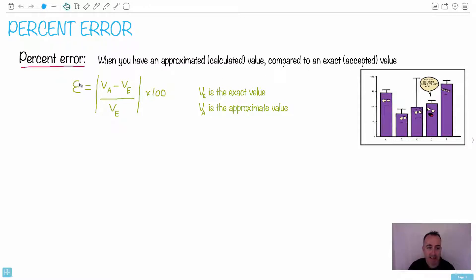So we have this equation right here, this weird-looking E, it's called epsilon, and that's just VA minus VE over VE. Don't forget VE is the exact value, the accepted one, and then VA is your approximate value, or the one you calculated.